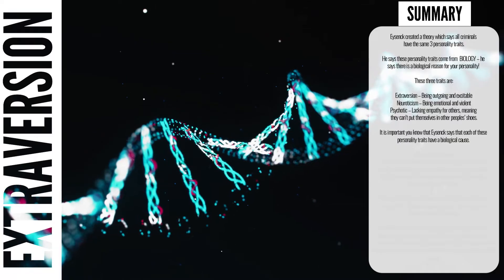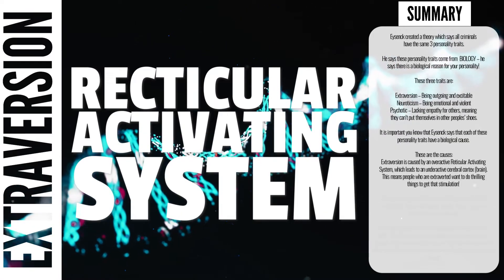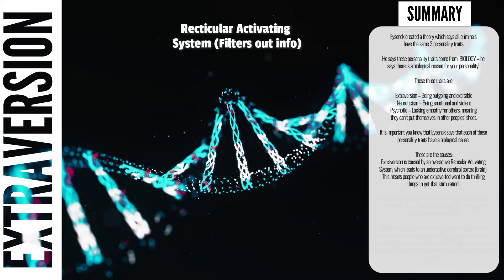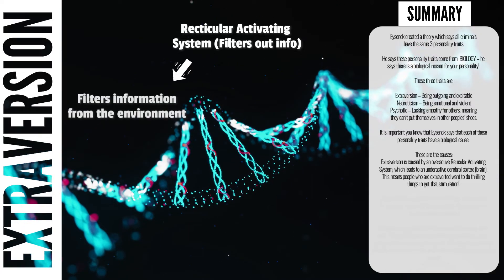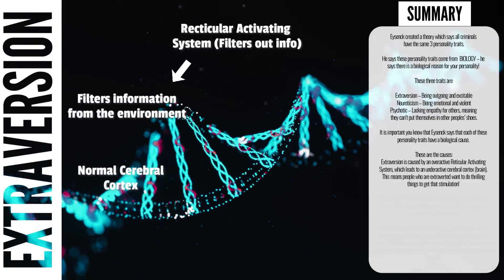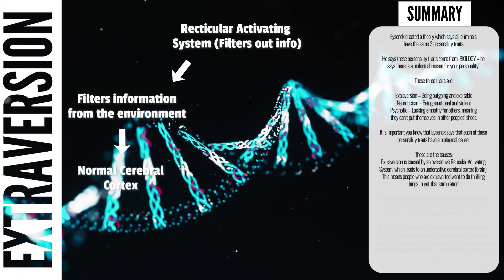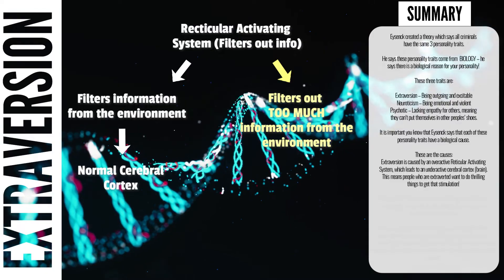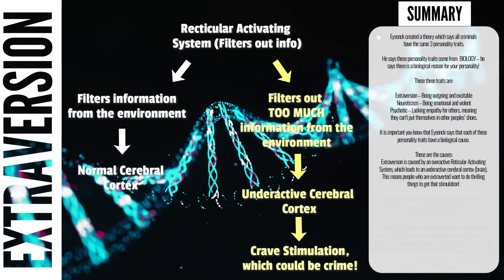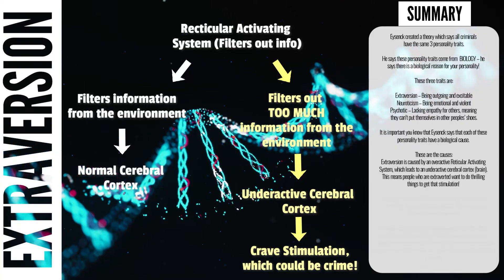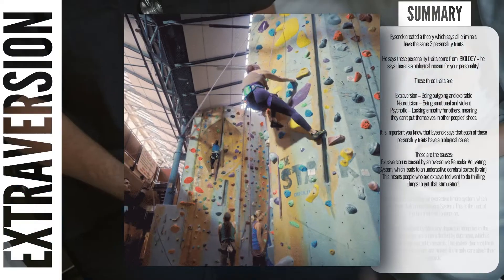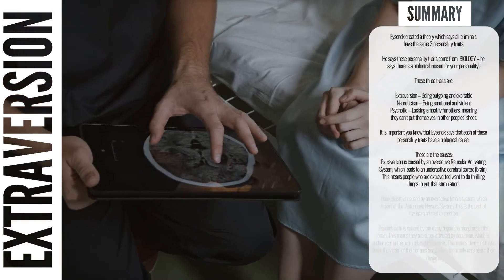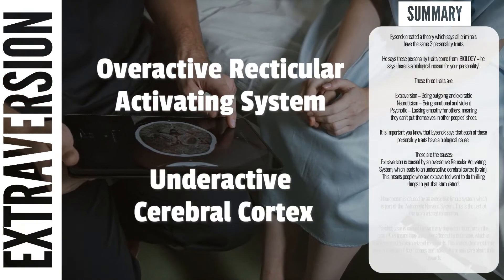In the case of extroversion, it's caused by a part of the brain called the reticular activating system. Although it sounds complicated, it's really not that bad — all you need to know is that it's the part of the brain that filters out information from our environment. In a normal brain the RAS filters out a normal amount of information, meaning the cerebral cortex is stimulated to a normal amount. However, those with extroversion, according to Eysenck, are said to have an overactive RAS, which filters out too much information, meaning the brain is craving stimulation — it's under-aroused. This leads to wanting stimulation from the environment, whether extreme sports or risky criminal acts. The key terms for extroversion are: overactive reticular activating system and underactive cerebral cortex.